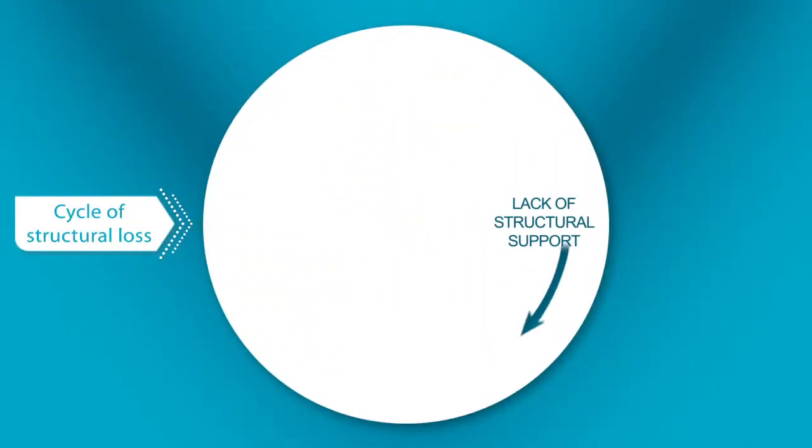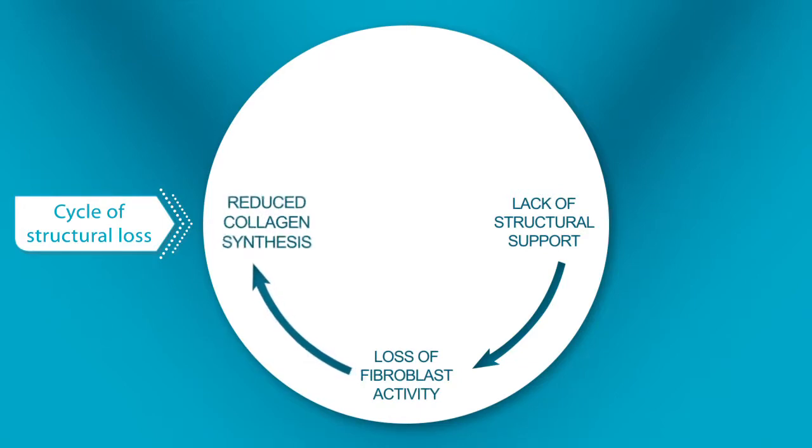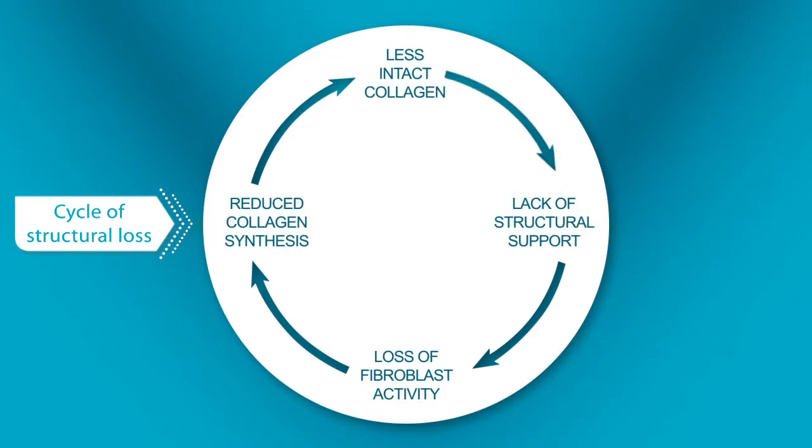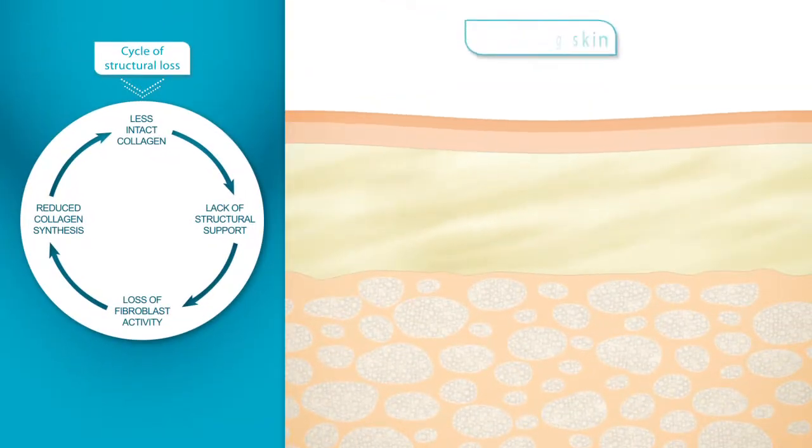Lack of structural support decreases fibroblast activity, leading to reduced collagen synthesis and more collagen debris. The visible result: sagging skin and wrinkle formation.